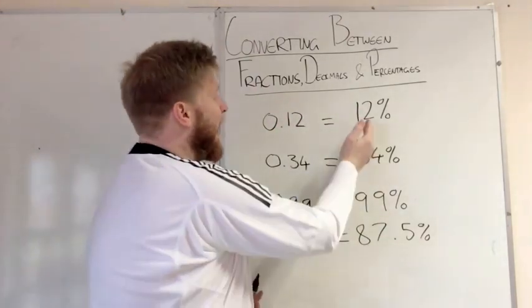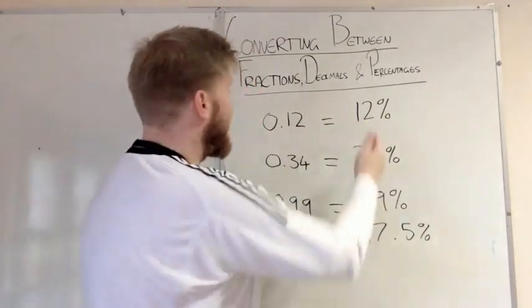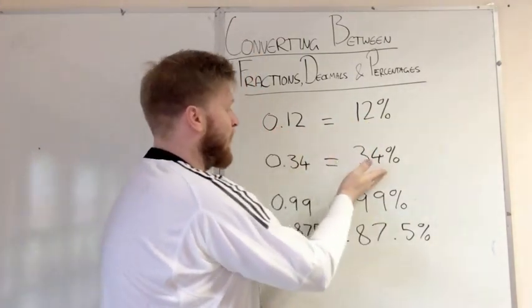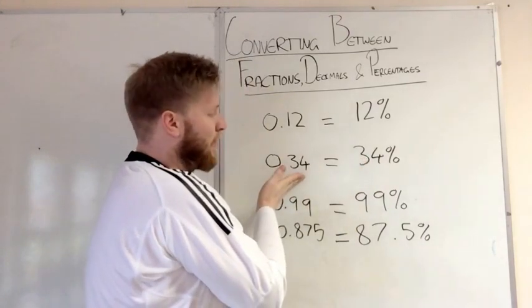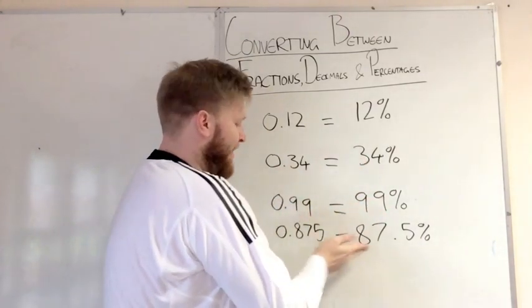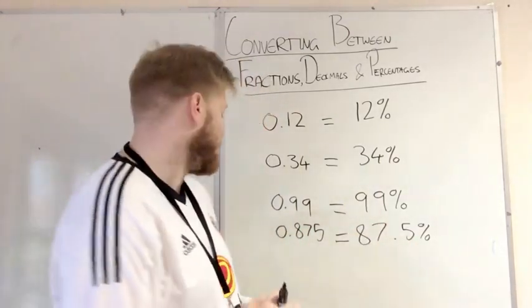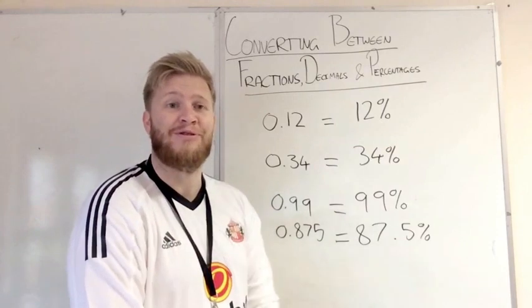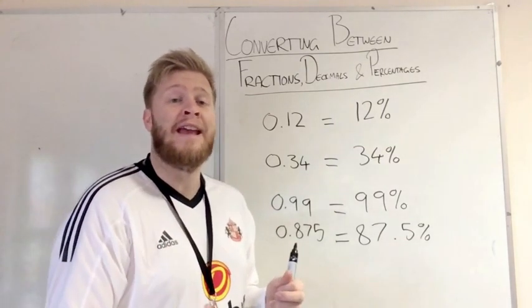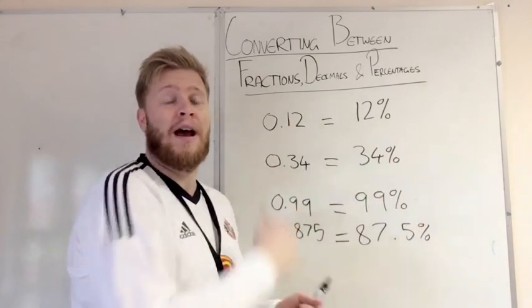So it's pretty simple to convert from a decimal to a percentage. And if you can see there, it's simple to do it the other way as well. So if you had 12%, that would be 0.12. If you had 34%, it would be 0.34. 99%, 0.99. And if you had 87.5%, it would be 0.875. So it's easy to convert between the percentage and the decimal, or the decimal and the percentage.